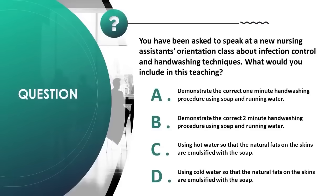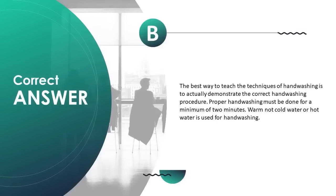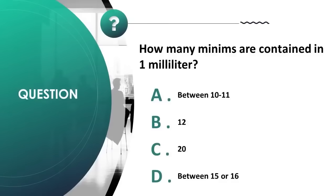You have been asked to speak at a nursing assistant orientation about infection control and handwashing. What would you include? A) demonstrate the correct 1-minute handwashing using soap and running water, B) demonstrate the correct 2-minute handwashing using soap and running water, C) use hot water so fats on skin are emulsified, D) use cold water so fats are emulsified. Correct answer is B. Proper handwashing must be done for a minimum of 2 minutes using warm water.